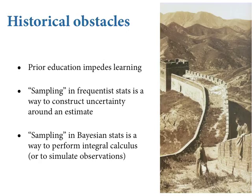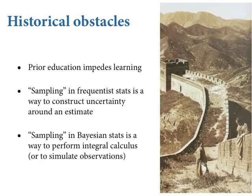Confidence interval is a classic example of that. Bayesian confidence intervals should not be interpreted the same way as non-Bayesian confidence intervals. Even innocent words like sampling — you did a bunch of sampling in your homework. Your previous education can impede learning because it puts up an obstacle that is purely historical, like the Great Wall of China. Your prior education in frequentist statistics is just a historical obstacle right now to your full embodiment of the Bayesian approach. But you'll work through it; you'll eventually climb over this wall.